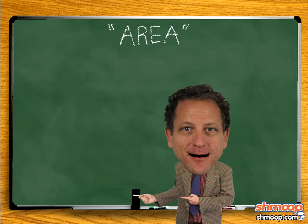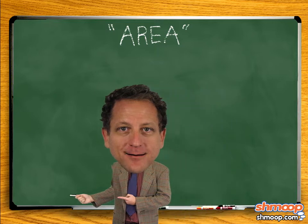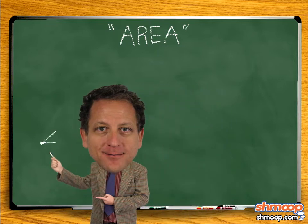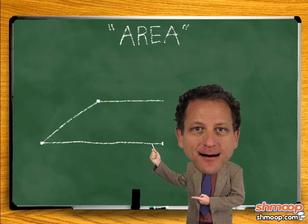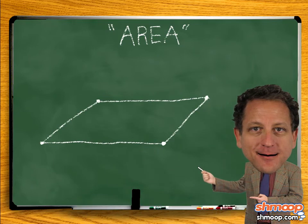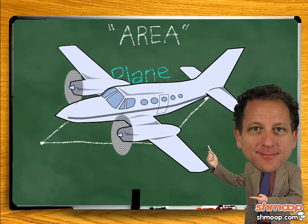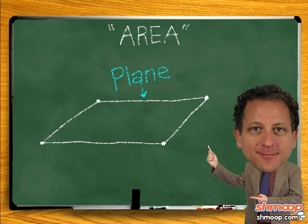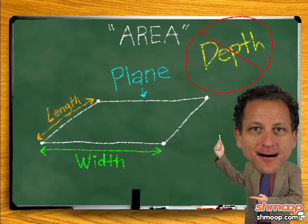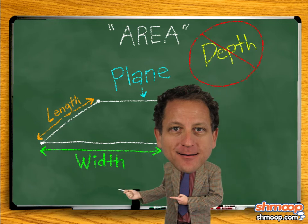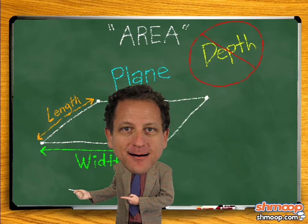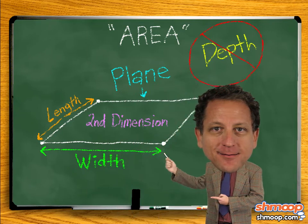Area is a mathematical term used to express the extent of a two-dimensional space, also known as a plane. In other words, area measures length and width, but not depth, so it occurs entirely in the second dimension.